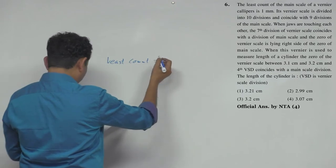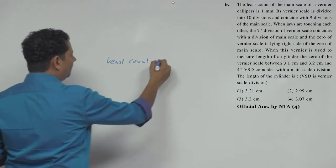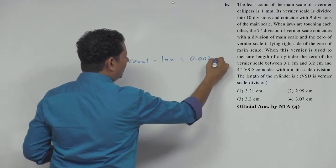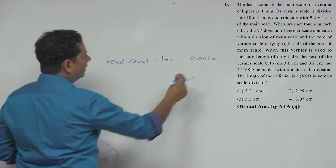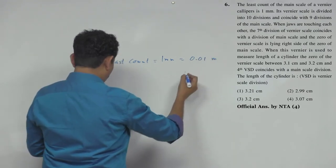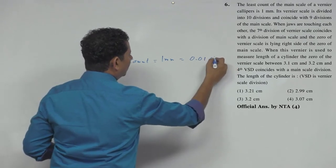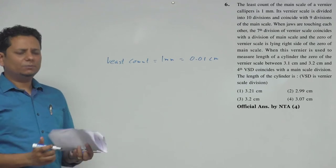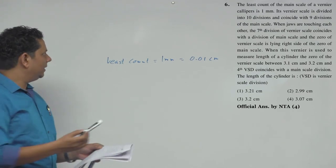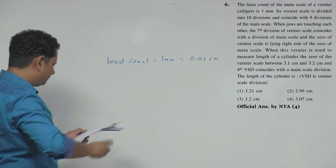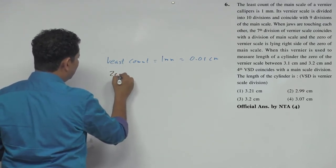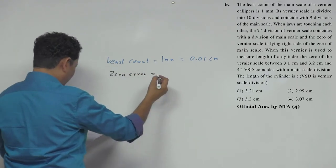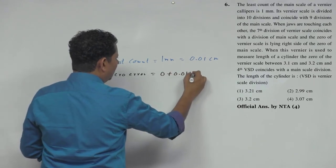Least count, we can write 1 mm in meter, then 0.001 meter. This is 0.01 centimeter.